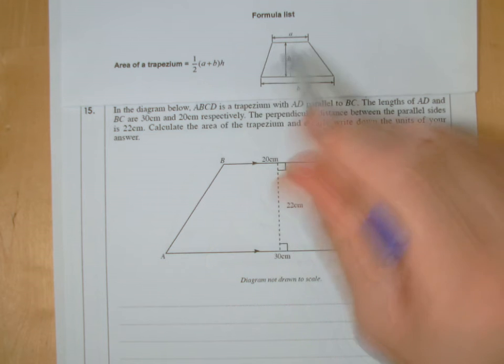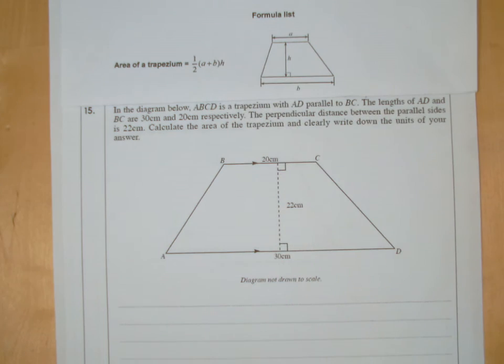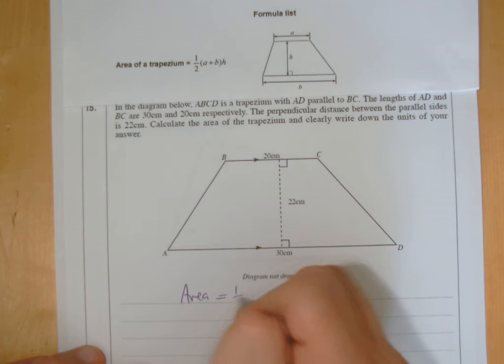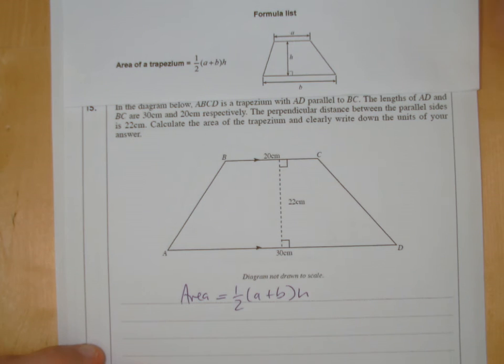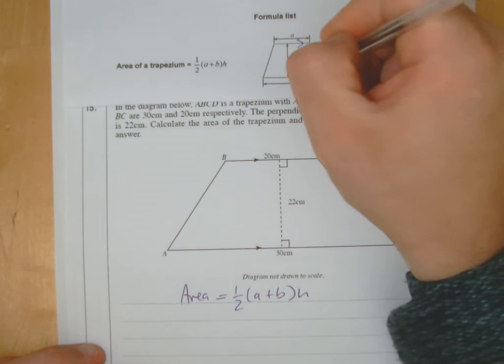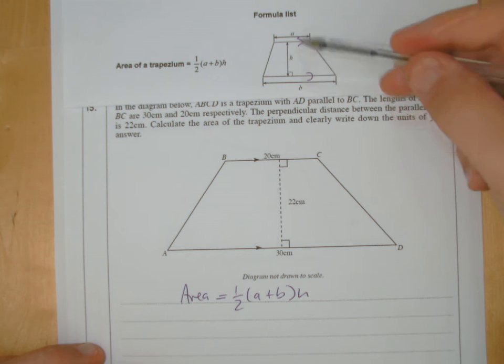So go and have a look at it in the exam, and you can just copy it down. So basically, I'm going to copy that down: area equals one half A plus B, H. And note here, A and B are the two sides that are parallel. They don't put the arrows here on the formula sheet, but they look parallel, don't they?